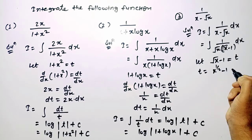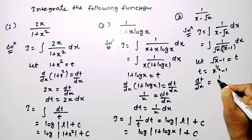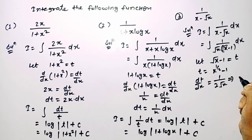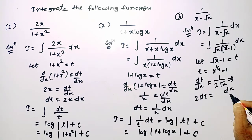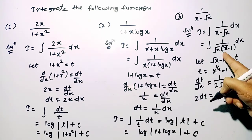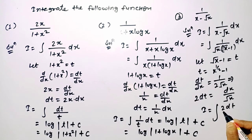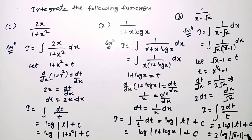Differentiating with respect to x on both sides, we get 1 upon 2 root x, so dt equals dx upon 2 root x, meaning dx upon root x equals 2 dt. Substituting, the integral becomes integration of 2 upon t dt. Integration of 1 upon t is log t, so the answer is 2 log(root x minus 1) plus c.